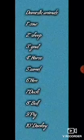Repeat again. Number one is cow. Number two is sheep. Number three is goat. Number four is horse. Number five is camel. Number six is hen. Number seven is duck. Number eight is bull. Number nine is pig. And the last one is donkey.